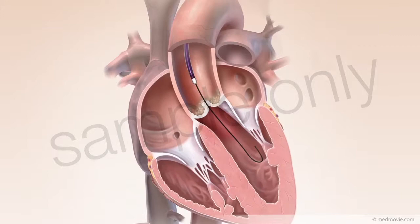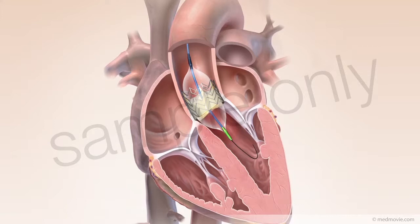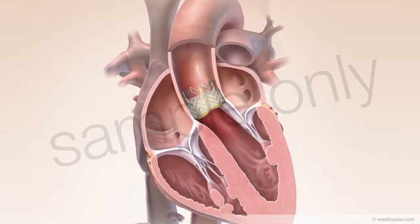A balloon catheter with a collapsed replacement valve is then inserted. Inflation of the balloon expands the replacement valve. The balloon catheter and guide wire are removed, leaving the functioning replacement valve in place and allowing blood to flow freely out of the heart.